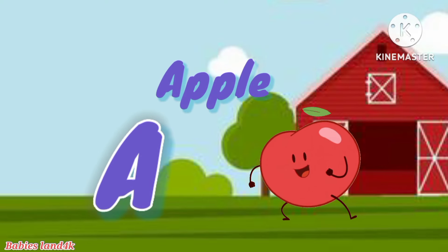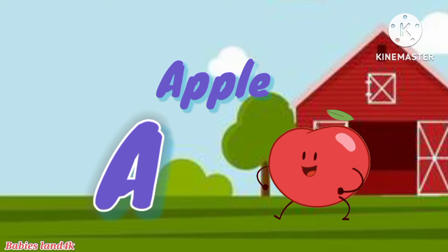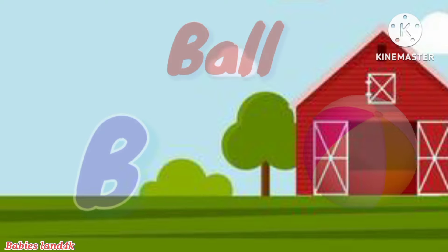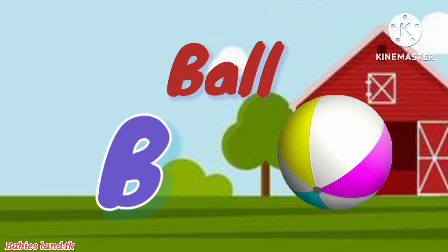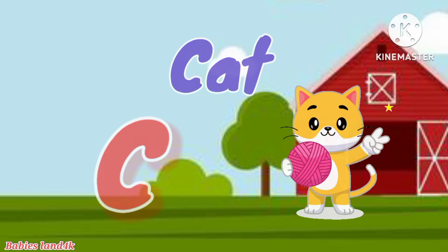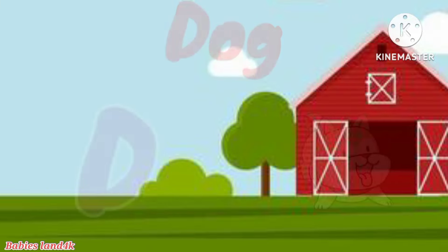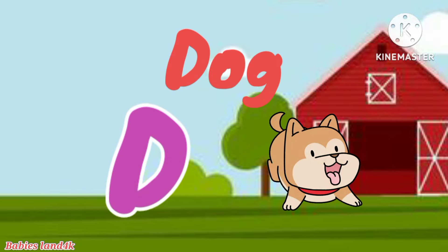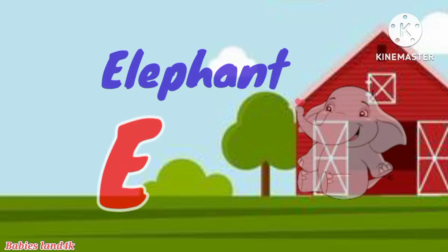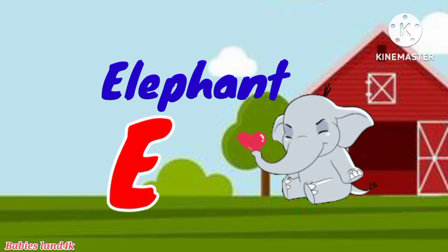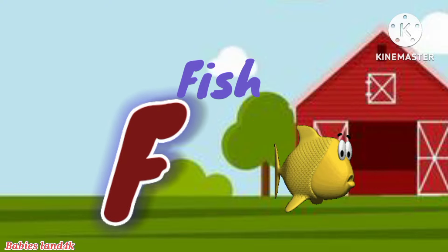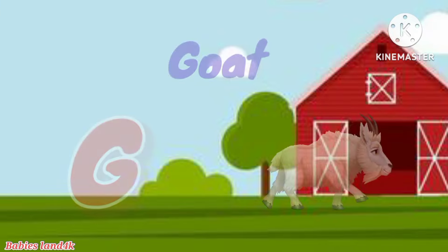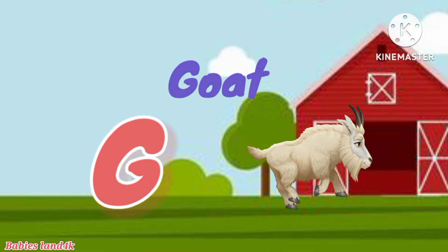A is for apple, a-apple. B is for ball, a-ball. C is for cat, k-k-cat. D is for dog, d-d-doll. E is for elephant, a-a-elephant. F is for fish, a-a-fish.